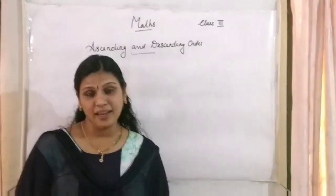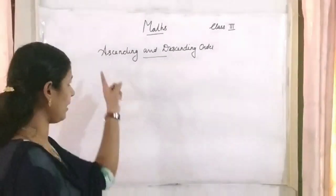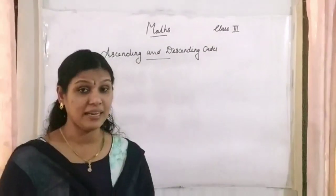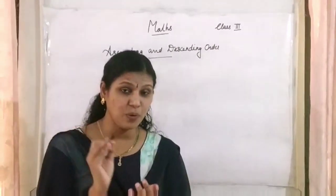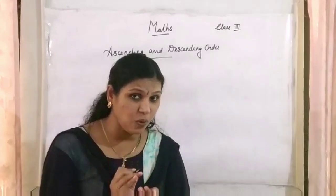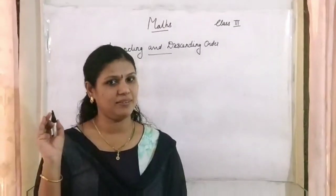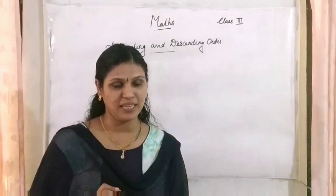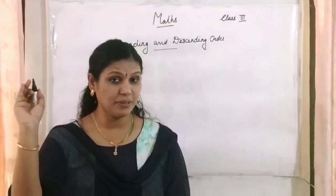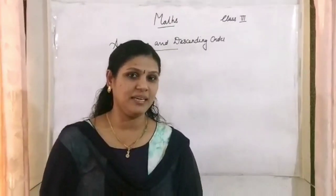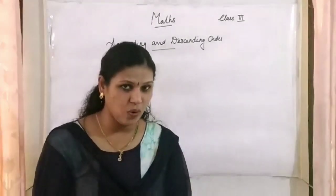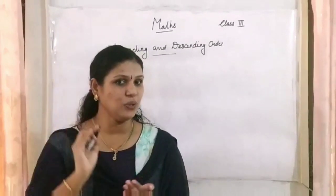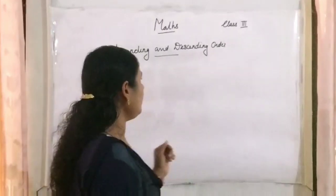Now we are going to study ascending and descending order. What do you mean by ascending order? Ascending order means writing numbers from the smallest number to the biggest number. And descending order is just the opposite of that — from the big number to the small number.